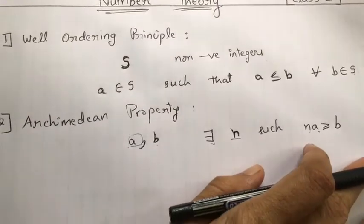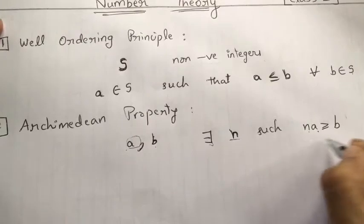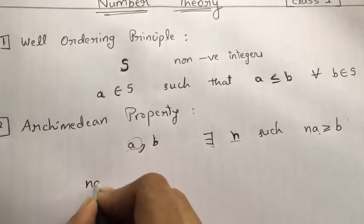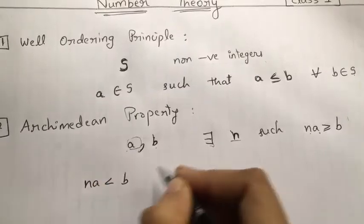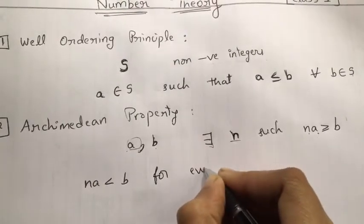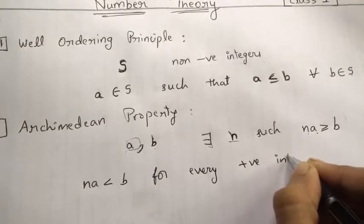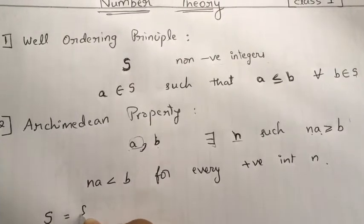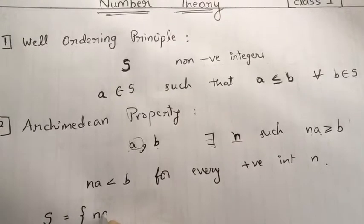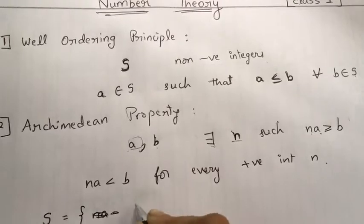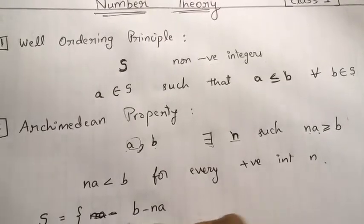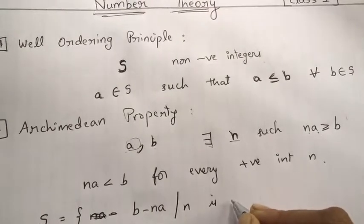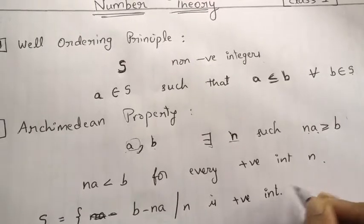This is the Archimedean property. We can easily prove this. Suppose it is not true — assume that n·a is less than b for every positive integer n. Then consider the set S = {b − n·a} where n is a positive integer.